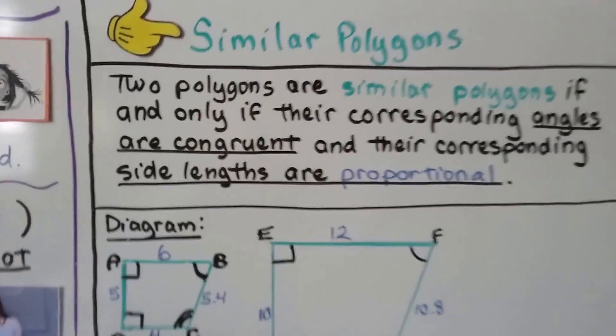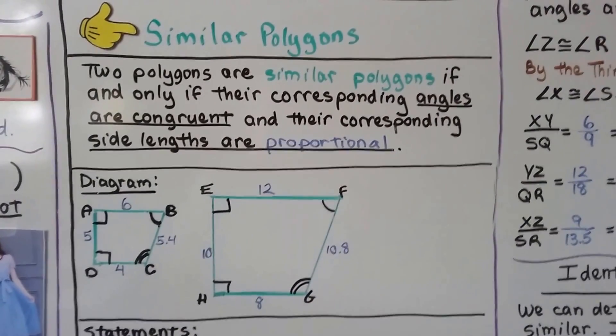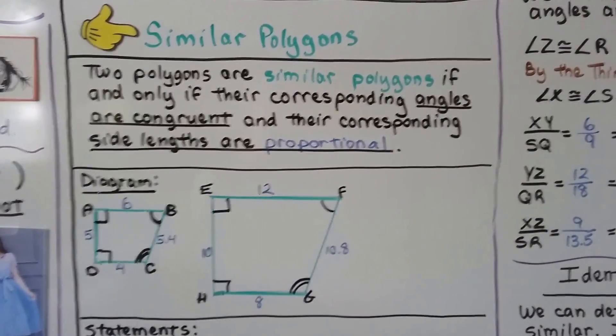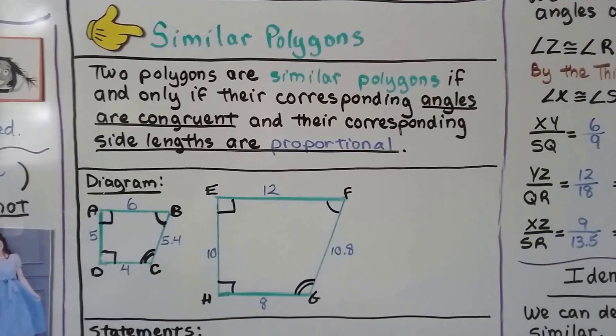Similarity means same shape. Congruent means same shape and size. Two polygons are similar polygons if and only if their corresponding angles are congruent and their corresponding side lengths are proportional.